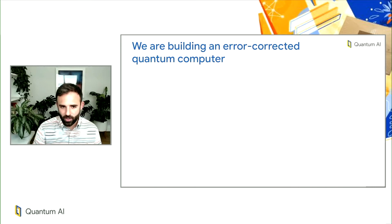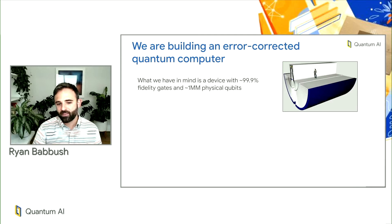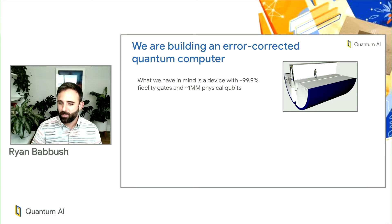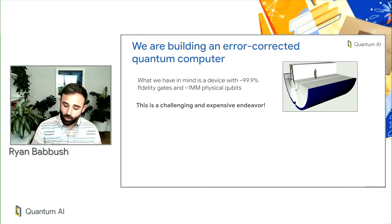As you may know, at Google we are building an error-corrected quantum computer. It may look something like this. What we have in mind is a device with about 0.1% error rates and about a million physical qubits that can execute the surface code. Needless to say, this is going to be a challenging and expensive endeavor, which begs the question: why?